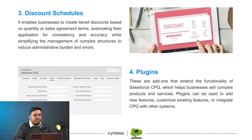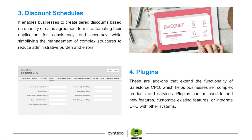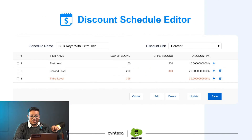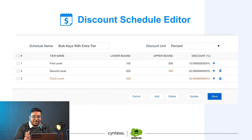Here's a simple view of how the discount schedule editor looks. If we look at the next slide, we can see we can define first level, second level, third level, and we can define the discount — like 10%, 20%, 30% in that.